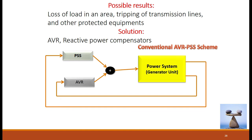The possible results include loss of load in an area due to overloading, switching actions, tripping of transmission lines, and other protective equipment operations. Voltage instability can be avoided by using AVR (Automatic Voltage Regulation) or reactive power compensation. These two control loops — the power system stabilizer and the automatic voltage regulator — work together to control the generating unit in the event of any load changes, adjusting voltage and power to maintain stability.